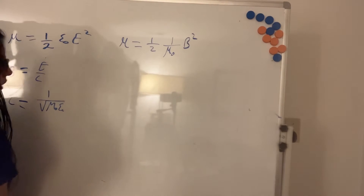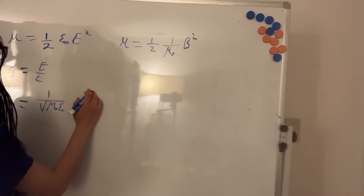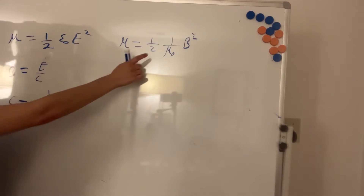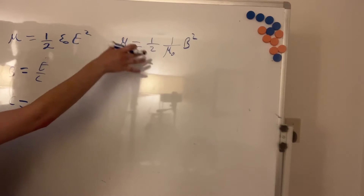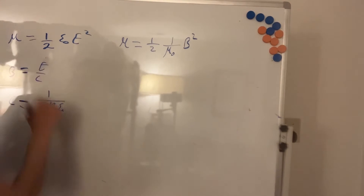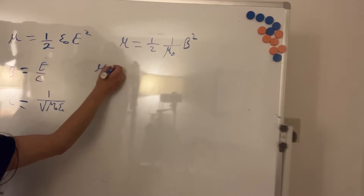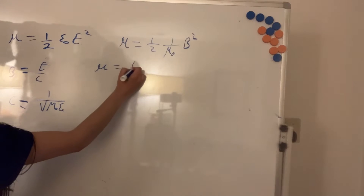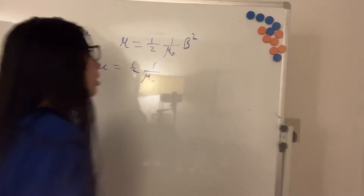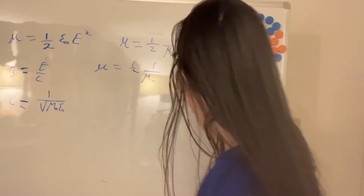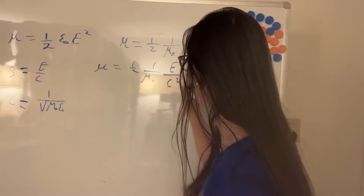So C squared would be one over mu naught epsilon naught. Now we can substitute this into the magnetic energy density expression, and we will see that the magnetic energy density is the same as the electric energy density. We have U equal to one half of one over mu naught times B squared, which becomes E squared over C squared.